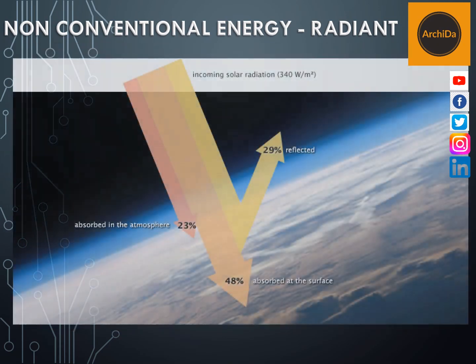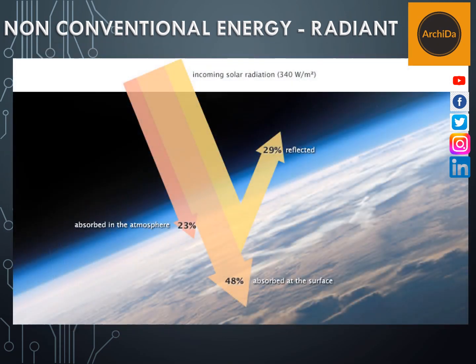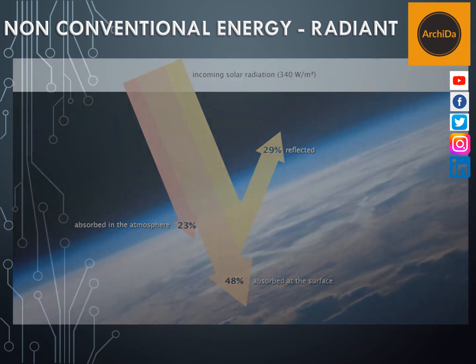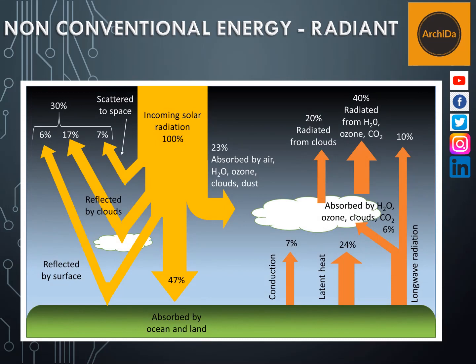The incoming solar radiation is measured at 340 watts per square meter, wherein 48% is absorbed by the surface, 23% is absorbed by the atmosphere, and 29% is reflected. Looking at 100% incoming solar radiation: 40% is absorbed by the ocean and land, 30% is scattered to space — reflected by the clouds and the surface — while 23% is absorbed by air, water, ozone, clouds, and dust.